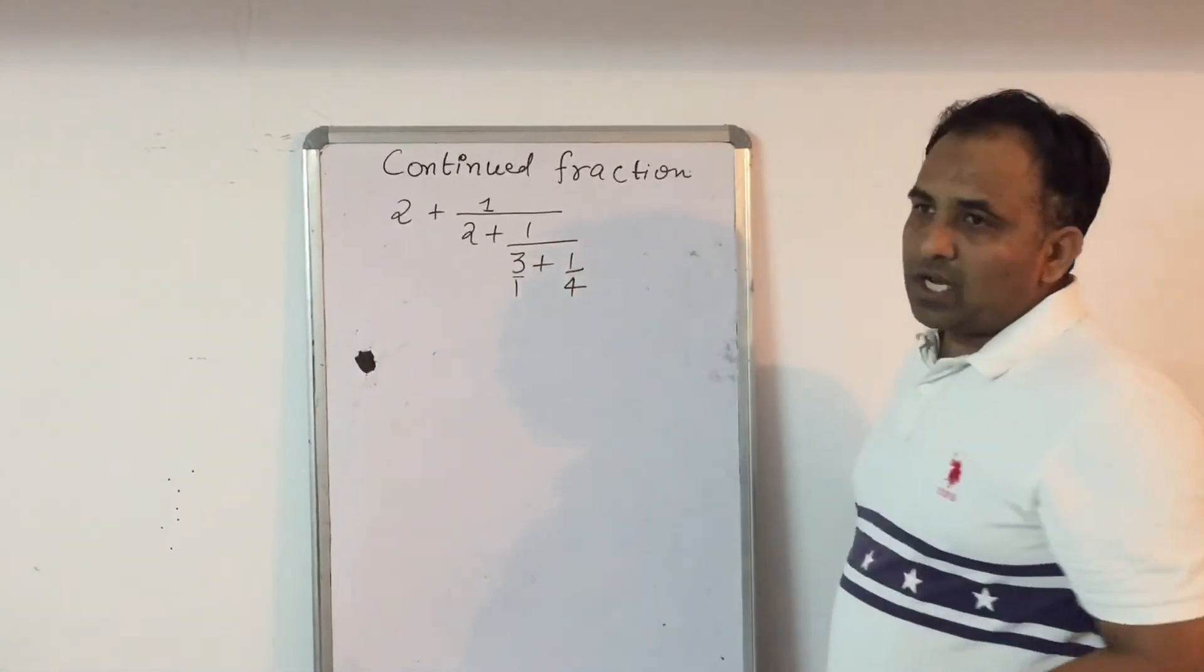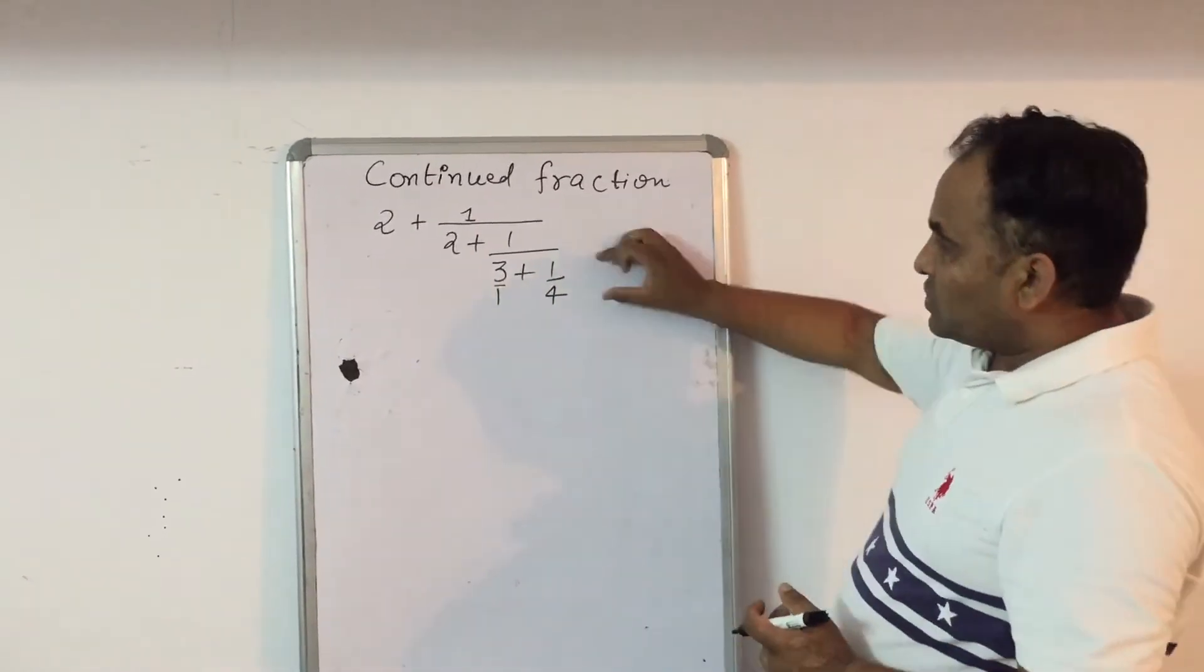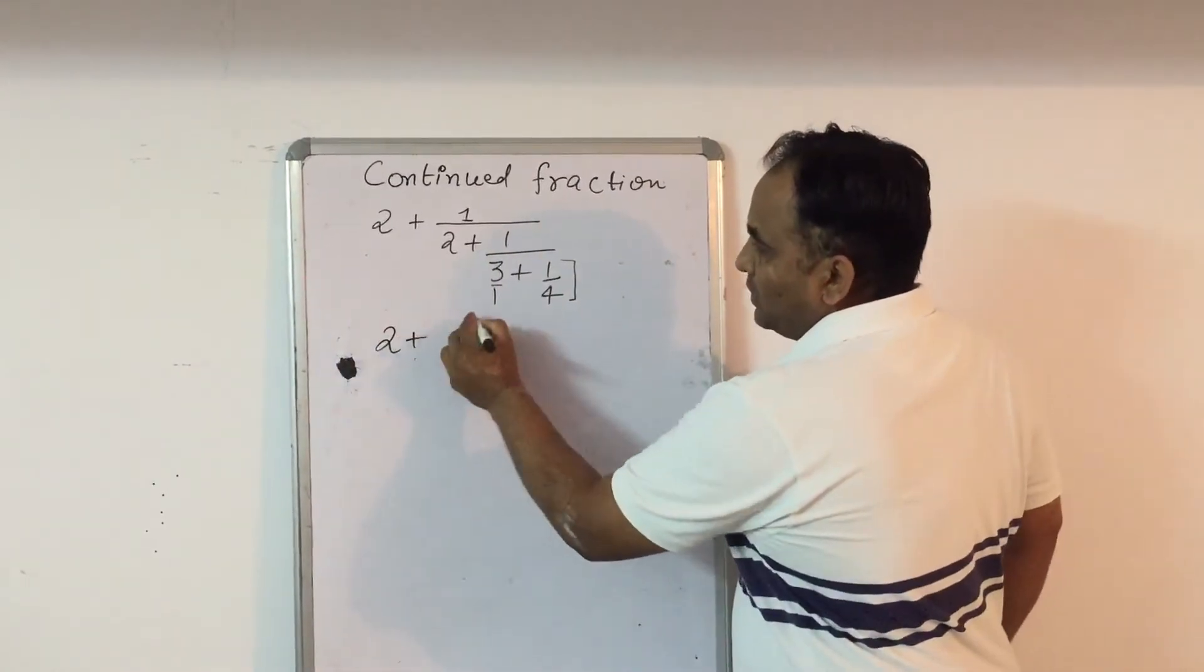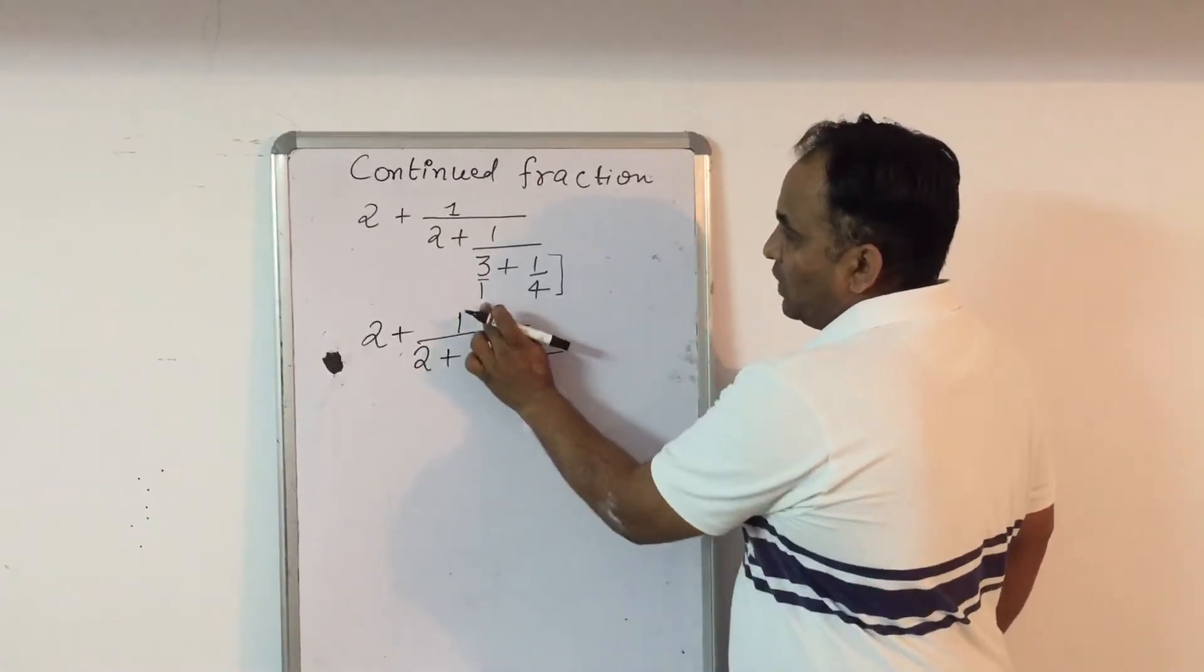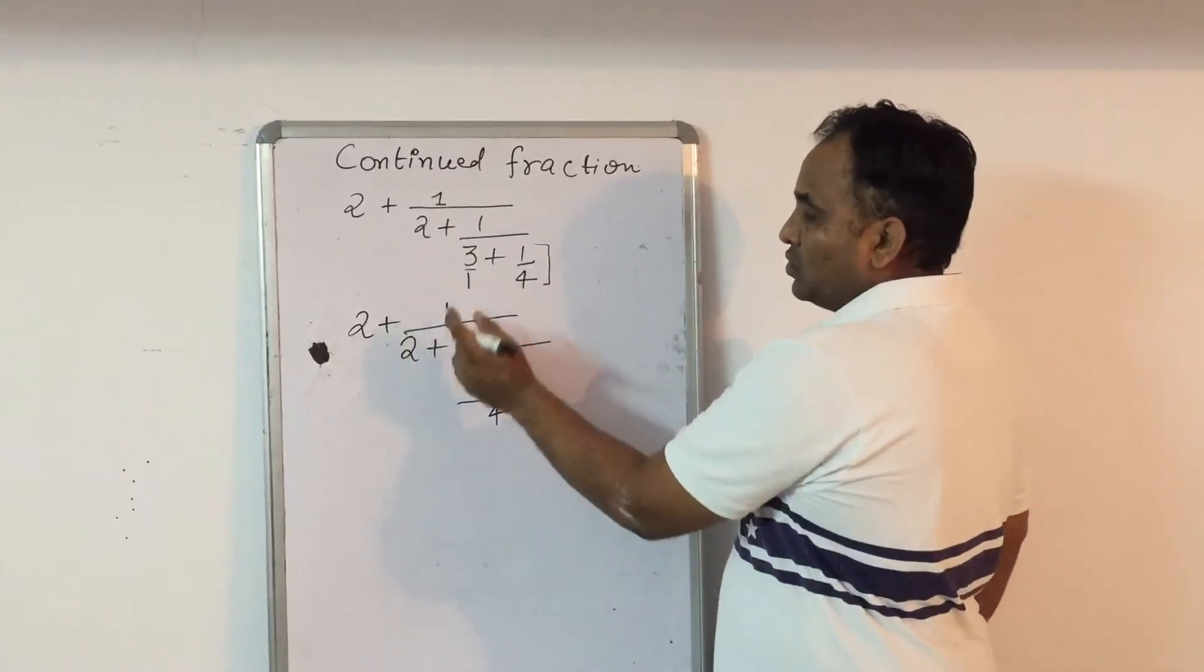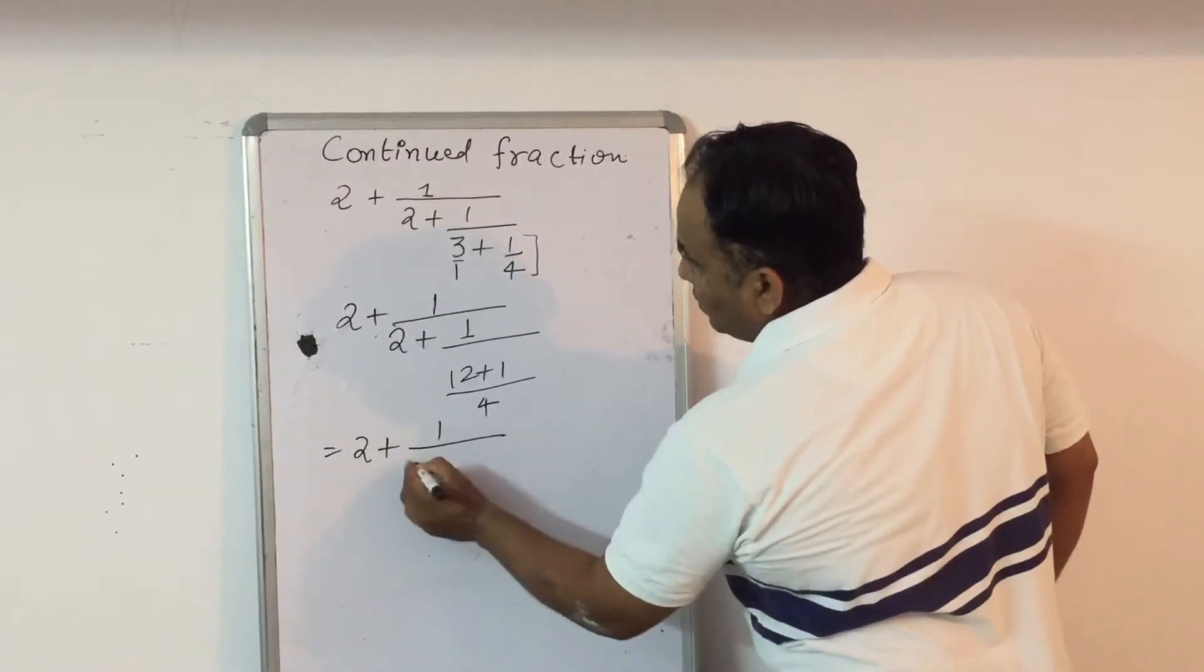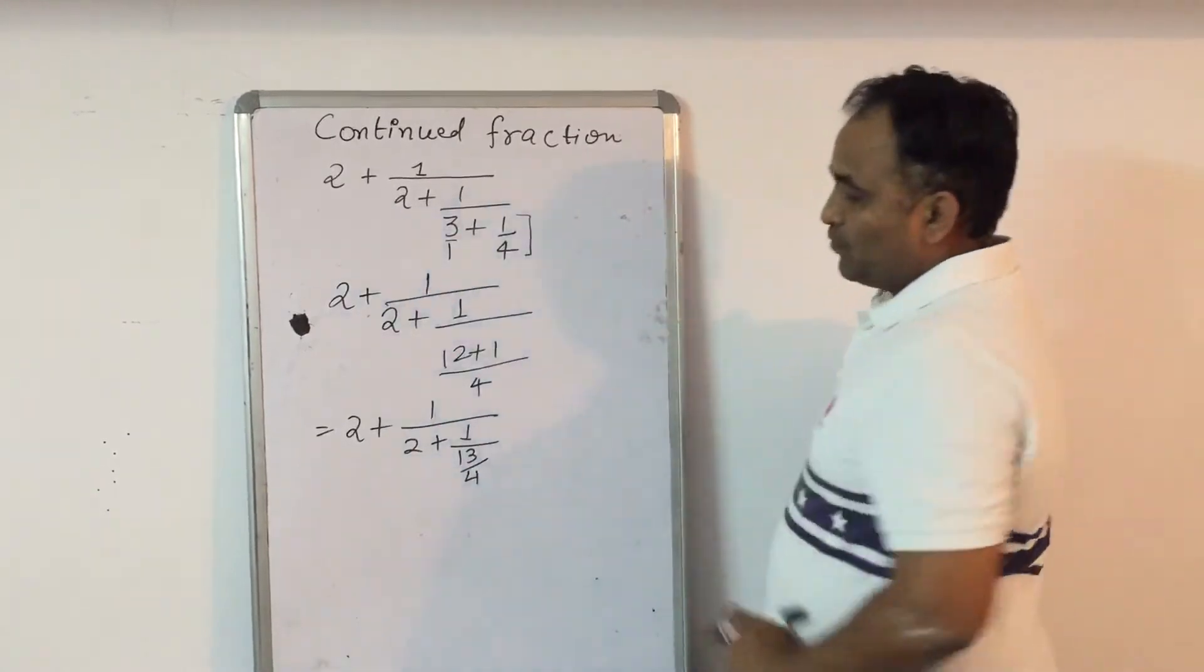Now, since 3 has no denominator, we will put it as 3 upon 1. So first we will simplify this. We will take the LCM. So we will write again 2 plus 1 upon 2 plus 1 upon. Now, the LCM of 1 and 4 is 4. 4 upon 1 is 4, 4 into 3 is 12, 12 plus 1 is 13. So the solution comes out to be 2 plus 1 upon 2 plus 1 upon 13 upon 4.